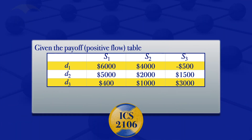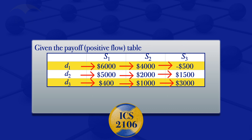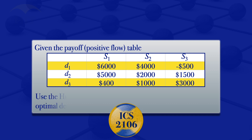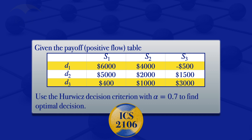Given the pay-off table which has decision alternatives D1, D2, and D3, states of nature S1, S2, and S3, and the following pay-offs, in this video I'm going to use the Hurwicz decision criterion with alpha equals 0.7 to find the optimal decision.